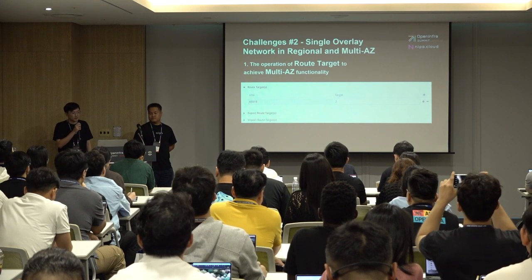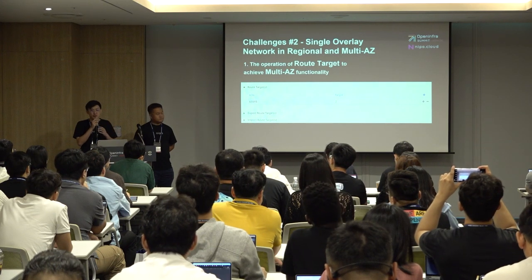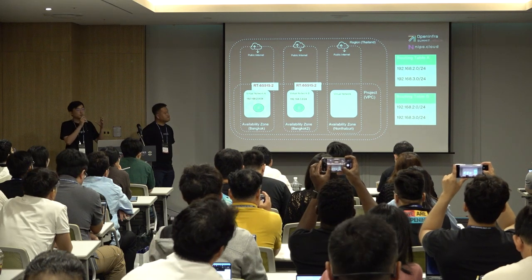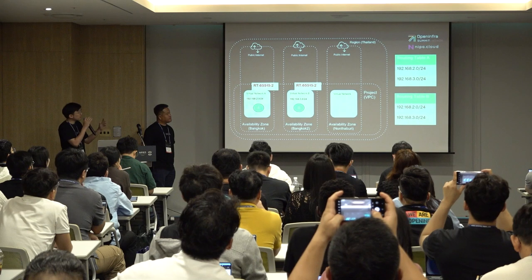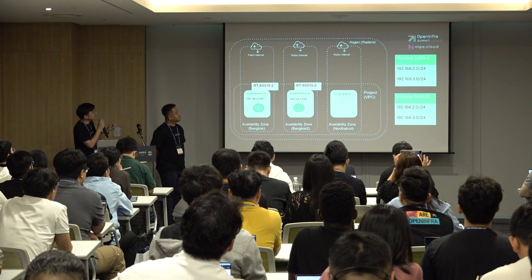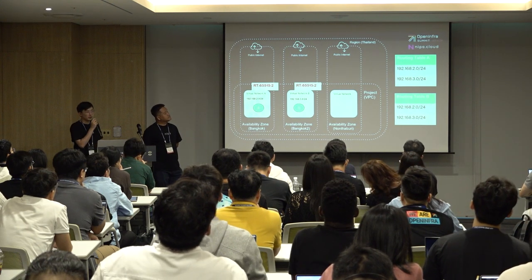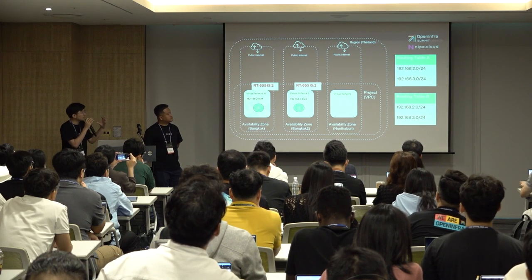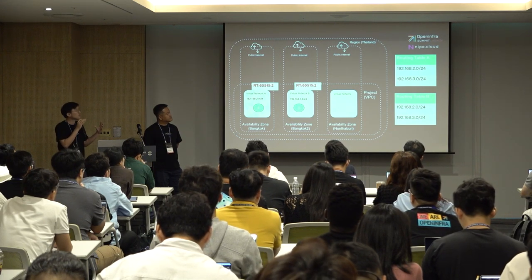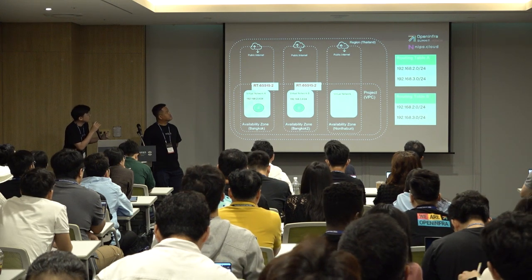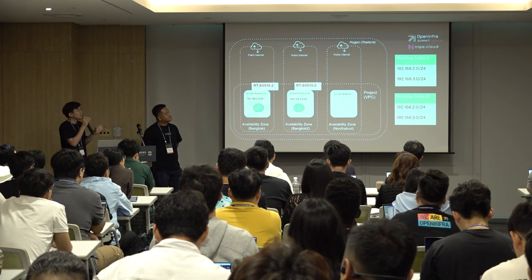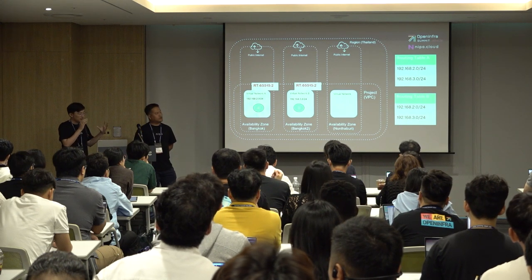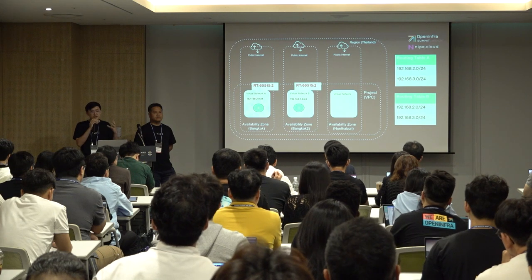The first option is the route target. You manually put the route target into your virtual network. For example, we have two AZs and need two subnets to communicate — Virtual Network A is 192.168.2.0 in Bangkok, and Virtual Network B is 192.168.3.0 in Bangkok-2, about 10 km away. You put the route target into each virtual network, the routes are exchanged, and both subnets can then communicate after manually configuring the route targets.